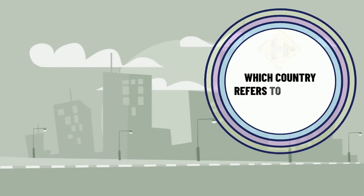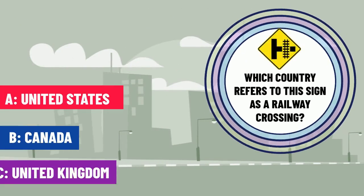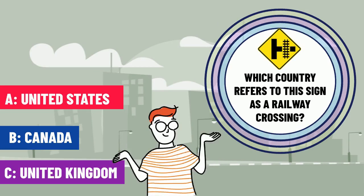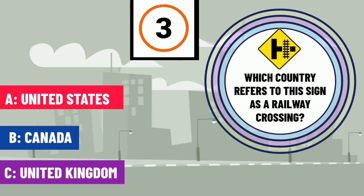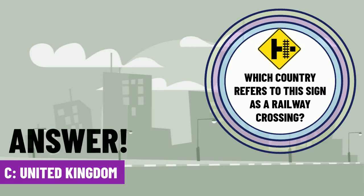And for our final question, number 15 — which country refers to this sign as a railway crossing? The correct answer is C — the United Kingdom.